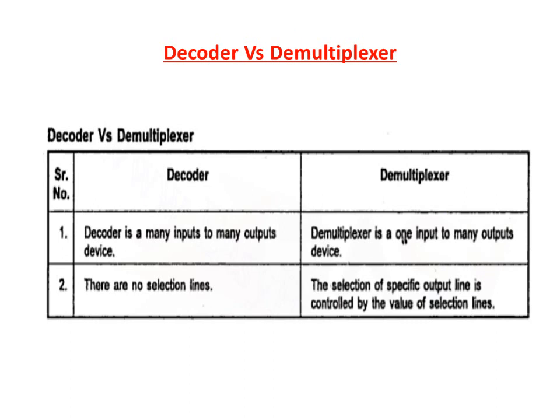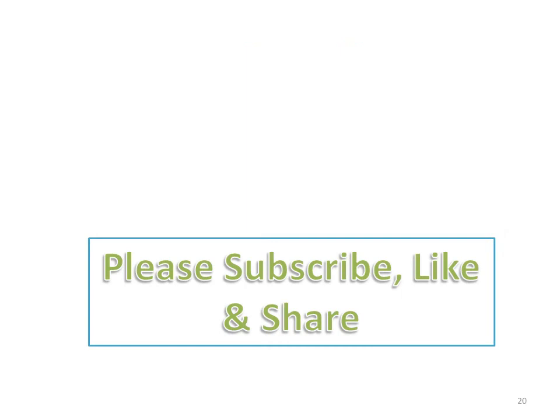This is the decoder compared with a demultiplexer. The decoder is a many-input to many-output device, while the demultiplexer is a one-input to many-output device. In the decoder there are no selection lines, whereas in the demultiplexer the selection of a specific output line is controlled by the value of the selection lines. Thank you.